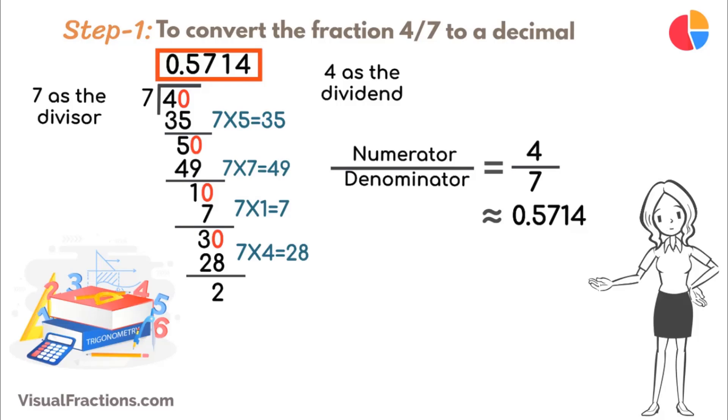Now, to convert 0.5714 to a percent, we simply multiply it by 100, resulting in approximately 57.14%.